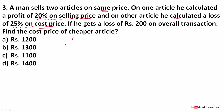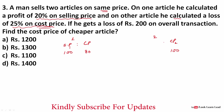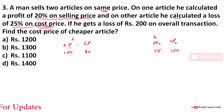For the first article, since profit is calculated on selling price, we take selling price as 100. The cost price is then 80 (selling price is higher than cost price by 20%). For the second article, since loss is calculated on cost price, we take cost price as 100, so selling price is 75. The ratios are SP1:CP1 = 100:80 = 5:4 and SP2:CP2 = 75:100 = 3:4.